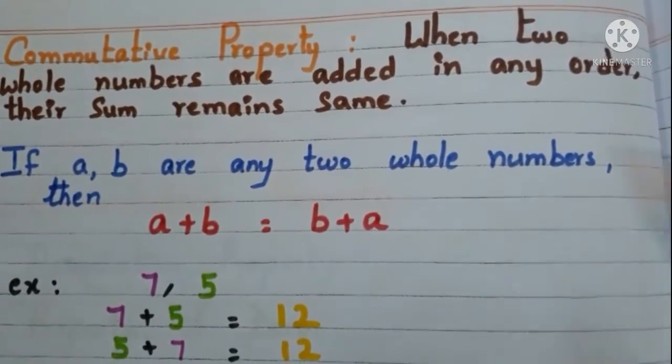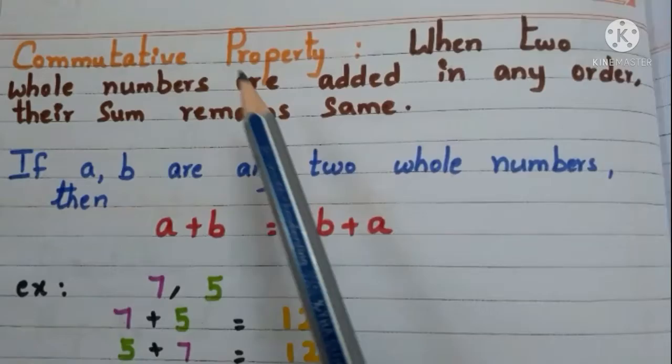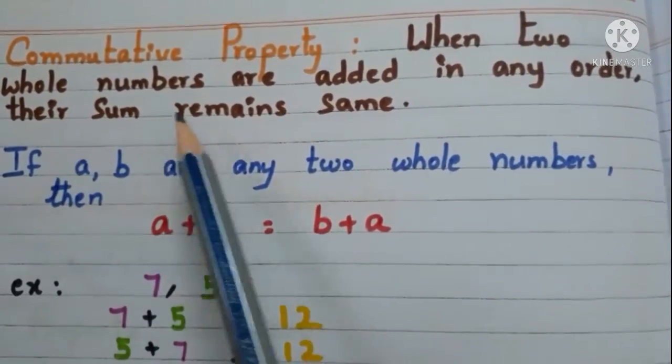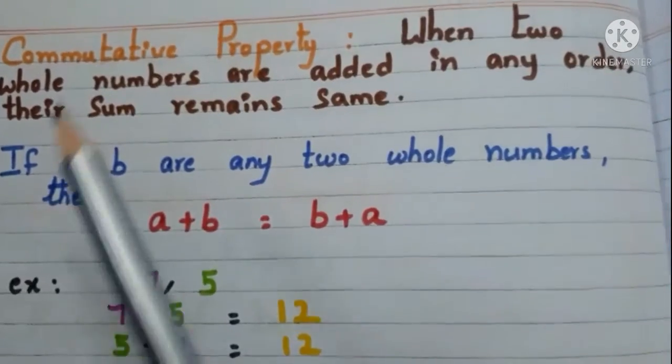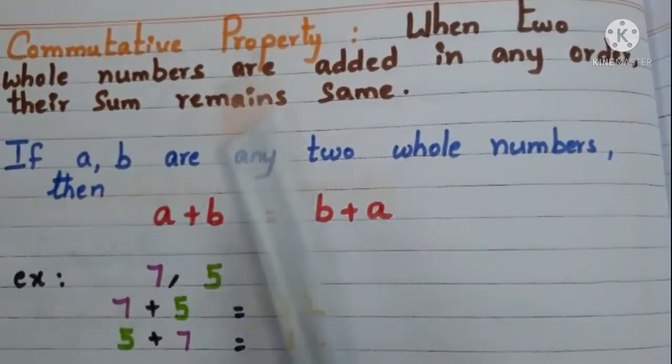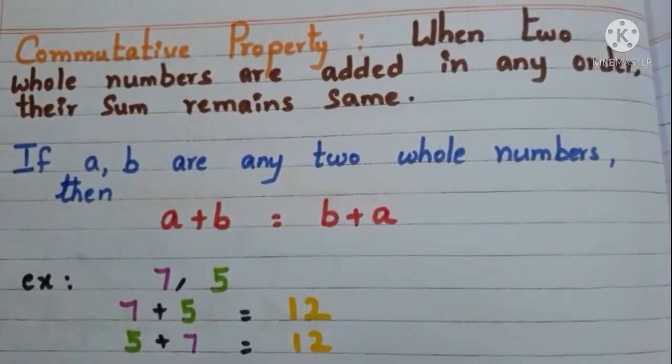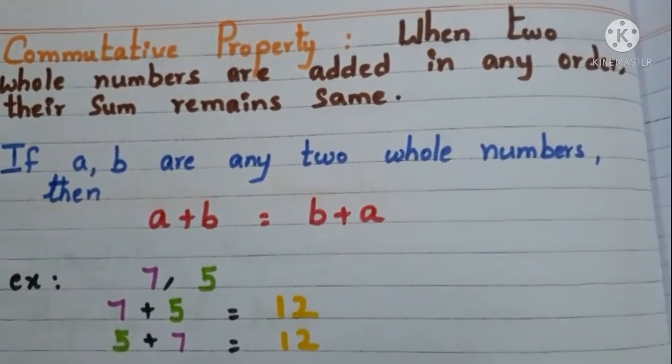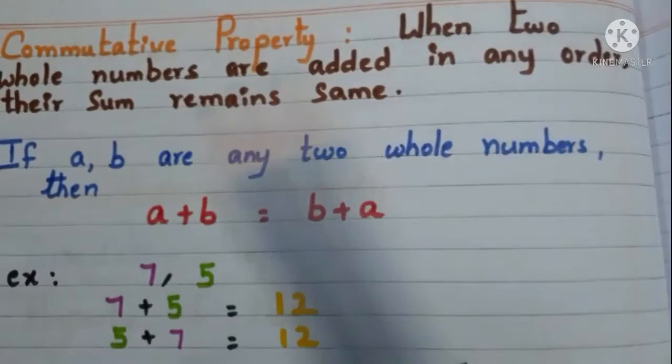Now commutative property. When two whole numbers are added in any order their sum remains same. If a and b are any two whole numbers then a+b is equal to b+a. Let us see with the example.